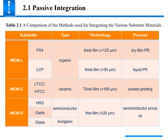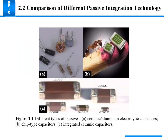Here is a comparison of methods used for integrating various substrate materials. MMCMR substrate is F4 LCP type, organic technology, thin film more than 125 micrometers and thick film more than 50 micrometers. Processes include tri-film PR and liquid PR. MCM LTCC and HTCC ceramic are more than 100 micrometers, screen printed. MCMT HRS on semiconductor organic material film is less than 20 micrometers, used in semiconductor processes.